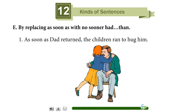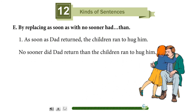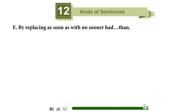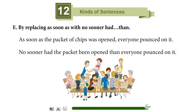Method E: by replacing 'as soon as' with 'no sooner had...than.' Example: 'As soon as Dad returned, the children ran to hug him' becomes 'No sooner had Dad returned than the children ran to hug him.' 'As soon as the packet of chips was opened, everyone pounced on it' becomes 'No sooner had the packet been opened than everyone pounced on it.'